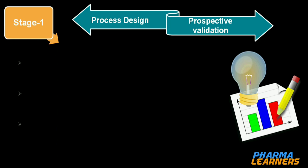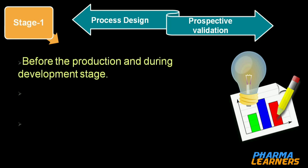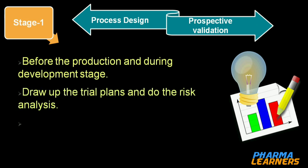Coming back to process validation: I correlate stage 1 with prospective validation. This type of validation is performed before production and during the development stage. We define the process parameters and CQAs based on the knowledge gained on the process variables.